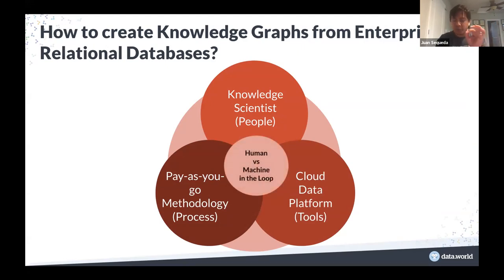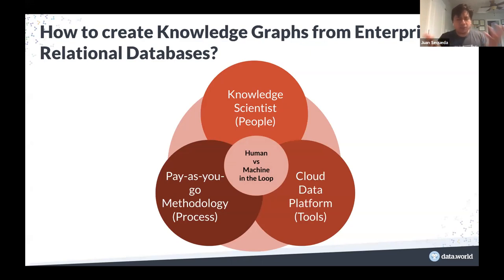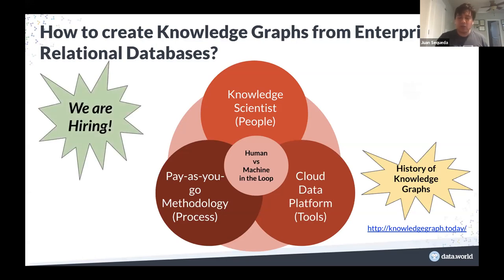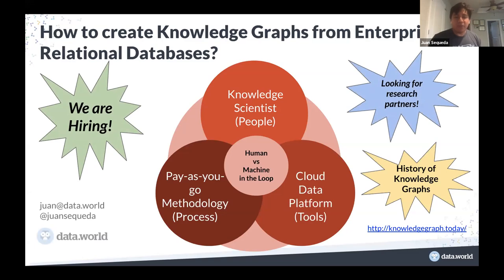Finally, we need more tools that understand how to combine people and processes together. And one final point: everyone is very interested in human-in-the-loop right now, but I ask myself — is it really human-in-the-loop? What if we want to understand and control the process and as humans understand where the machine should be involved? If you are interested in the history of knowledge graphs, together with Professor Claudio Gutierrez from the University of Chile we presented an entire tutorial on the history of knowledge graphs. We are hiring at Data.World and always looking for research partners. Thank you very much.